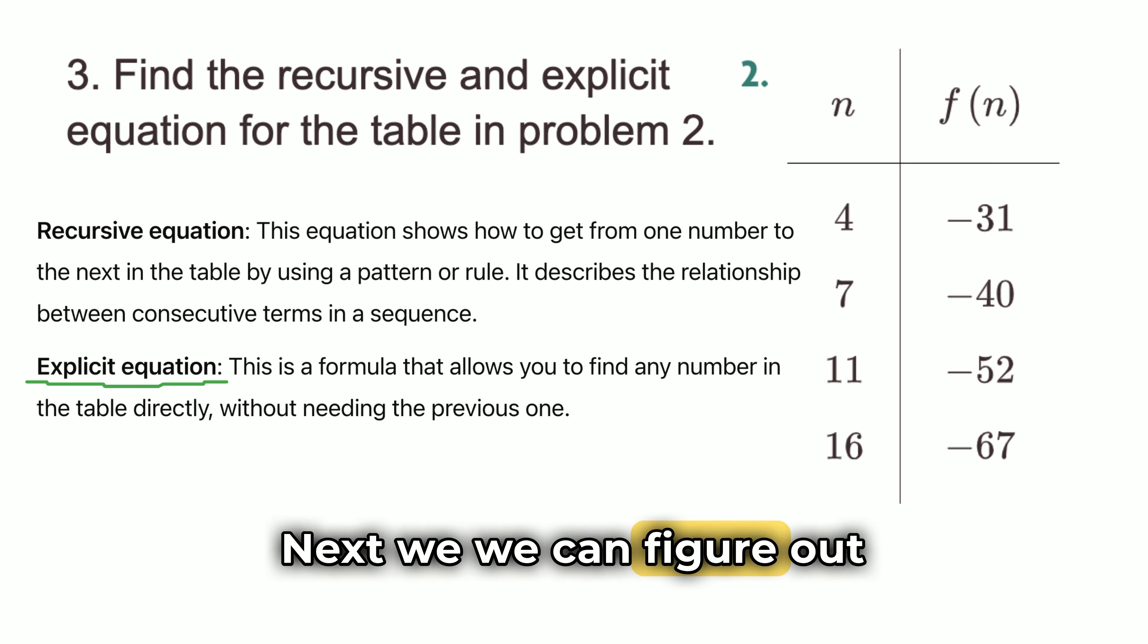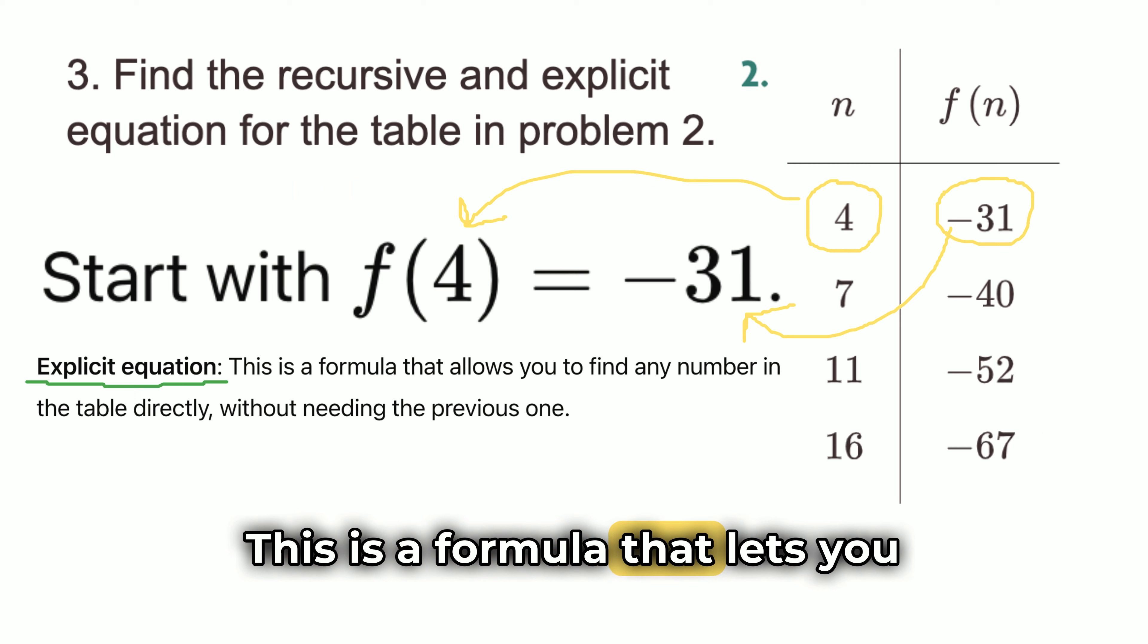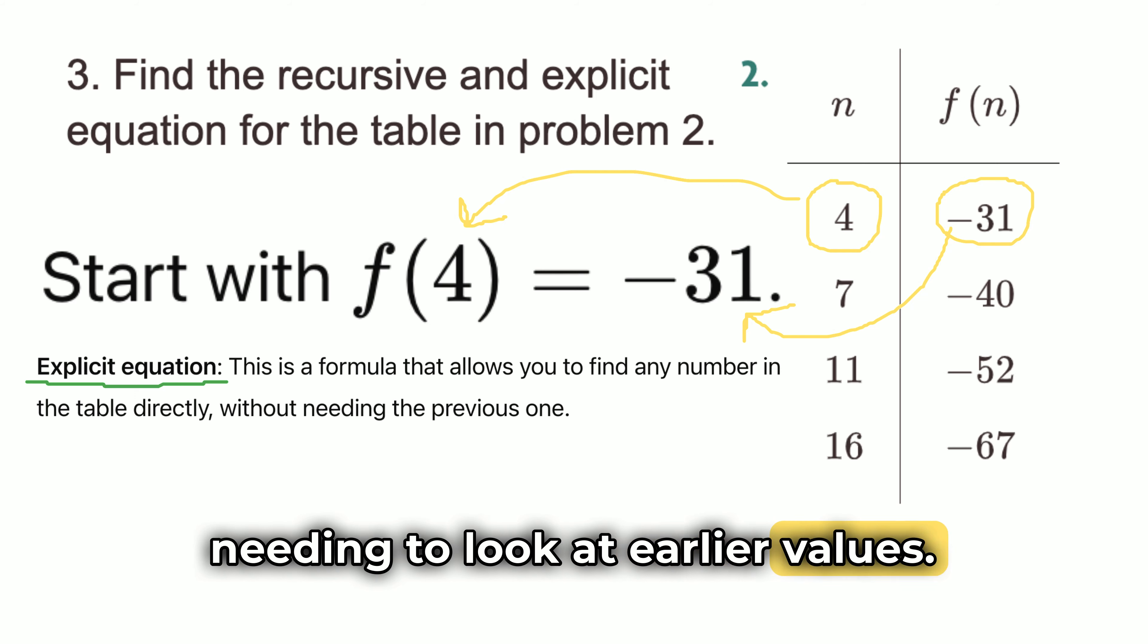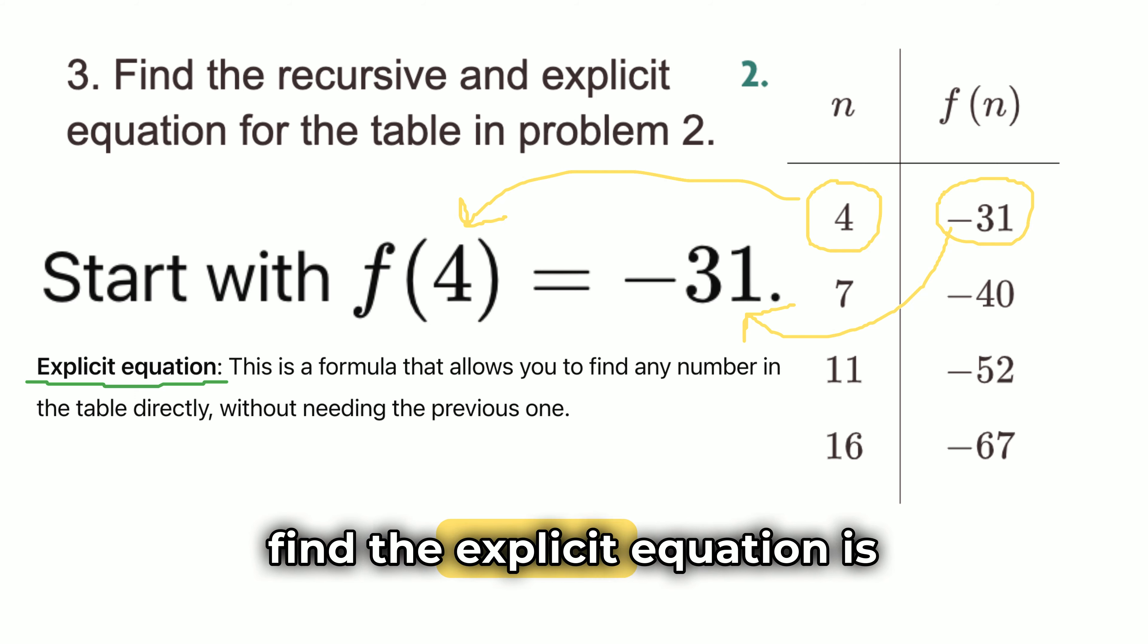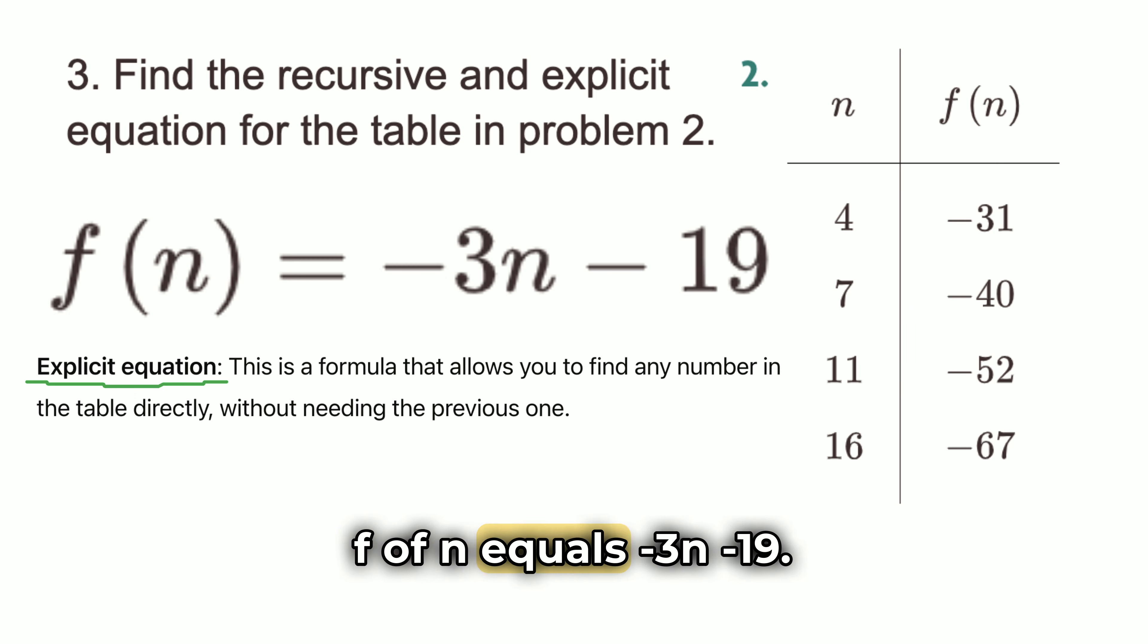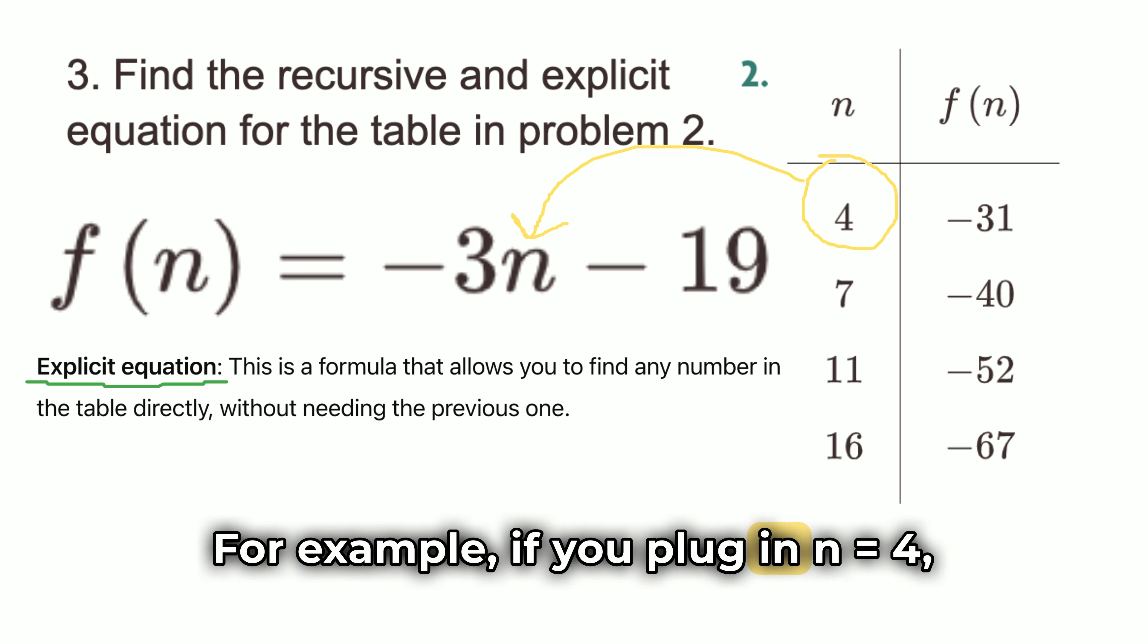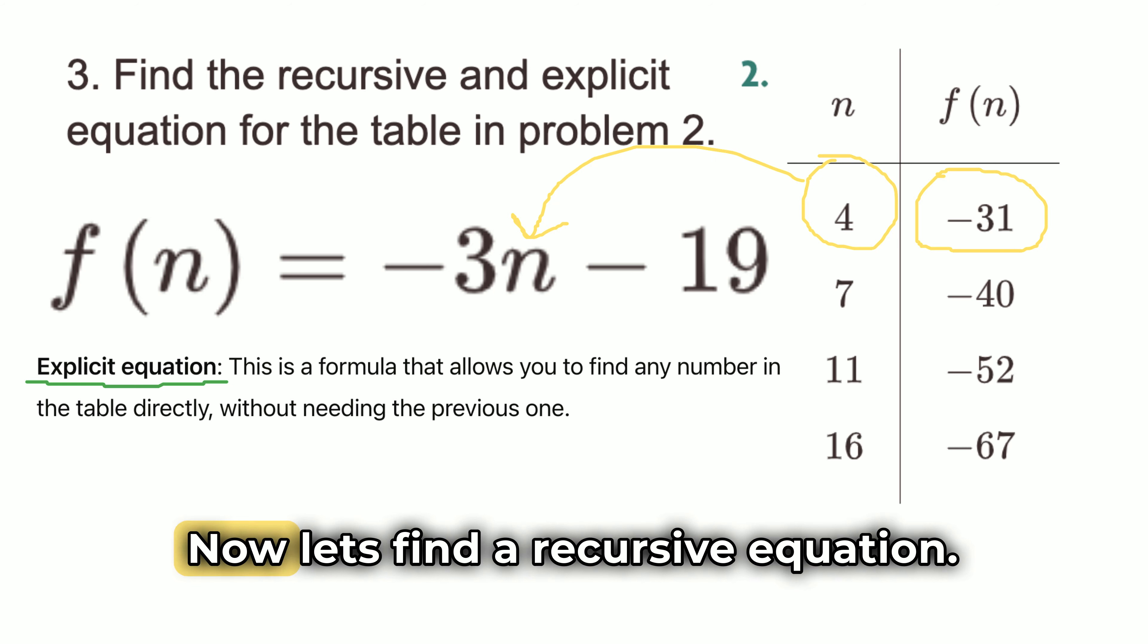Next, we can figure out the explicit equation. This is a formula that lets you find f of n directly without needing to look at earlier values. After doing some math, we find the explicit equation is f of n equals negative 3n minus 19. This means that for any value of n, you can use the formula to calculate f of n. For example, if you plug in n equals 4, you get f of 4 equals negative 31, which matches the table.